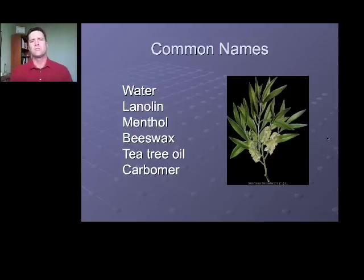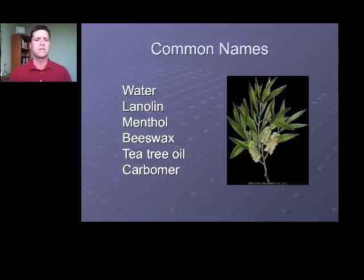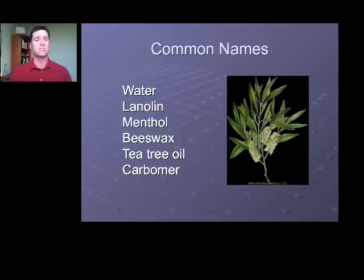Many raw materials were commonly used before the INCI name system was created and simply retain their common names — ingredients like water, lanolin, menthol, beeswax, and tea tree oil. To figure out the structures of these ingredients, which are often quite complicated, you'll have to look them up in the INCI dictionary. Carbomer is another example: it was a trade name for a thickening polymer originally produced by B.F. Goodrich that eventually became the common INCI designation for an acrylate thickener polymer.